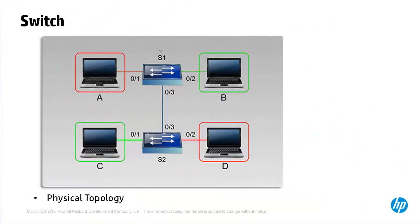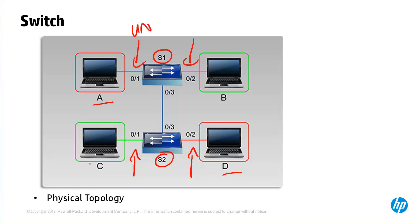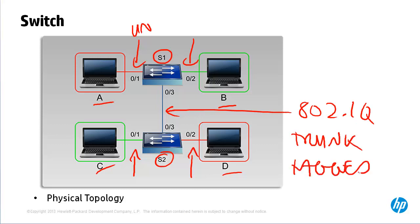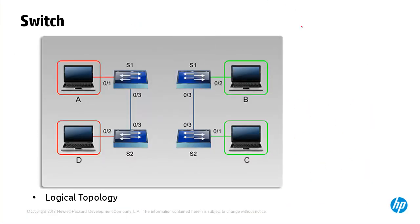Going back to our topology, we have two switches — switch 1 and switch 2. The ports are configured as access or untagged ports in the relevant VLANs: A and D are in the red VLAN, C and B are in the green VLAN. The link between the two switches is configured as an 802.1Q trunk or tagged port. This is the physical topology, however the logical topology is very different — logically we have four switches.